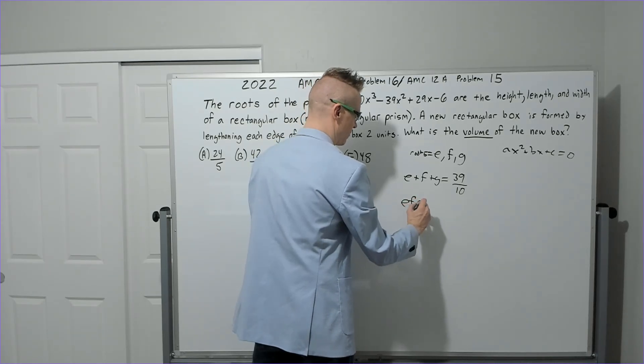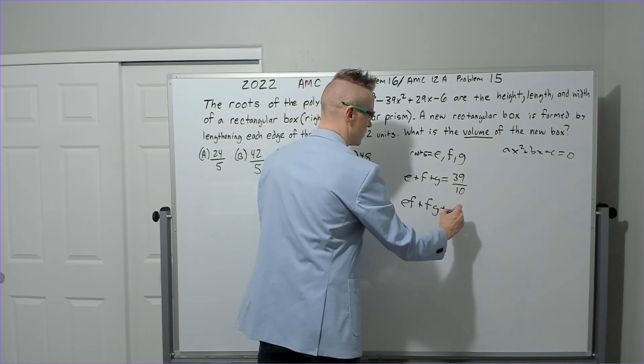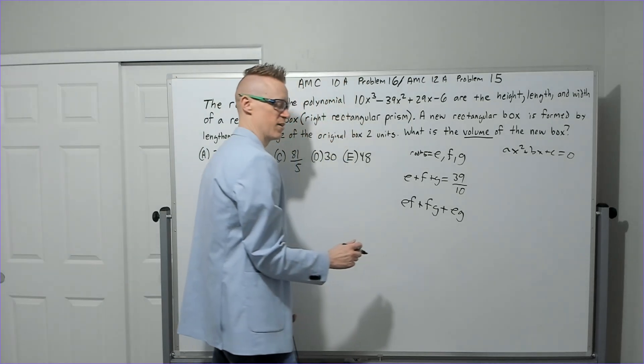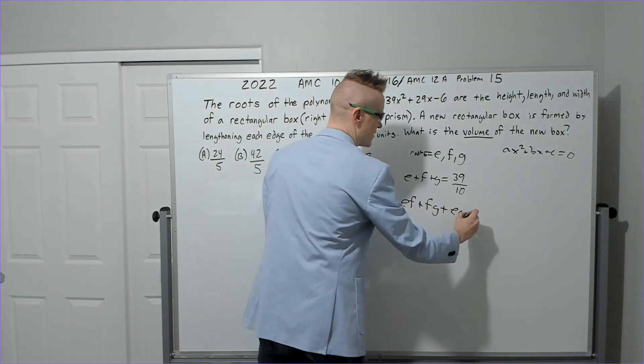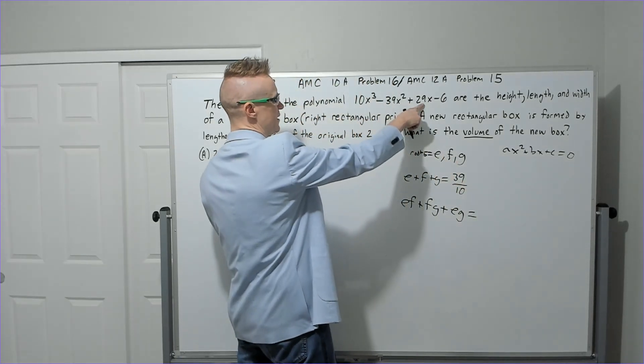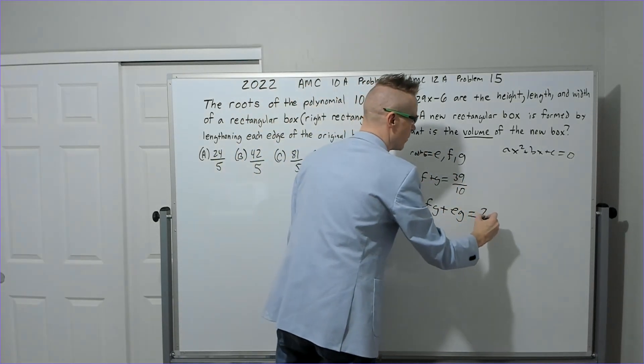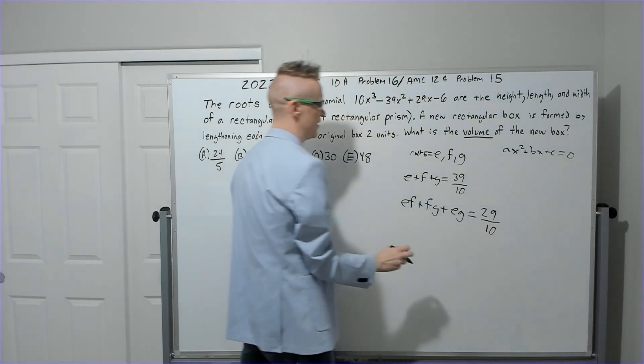That would be e with f, e with g, and f with g. And so we're going to get ef + fg + eg, for example. All right, that's a pun. Anyhow, this is going to equal 29 over 10, and it's the positive 29 over 10.